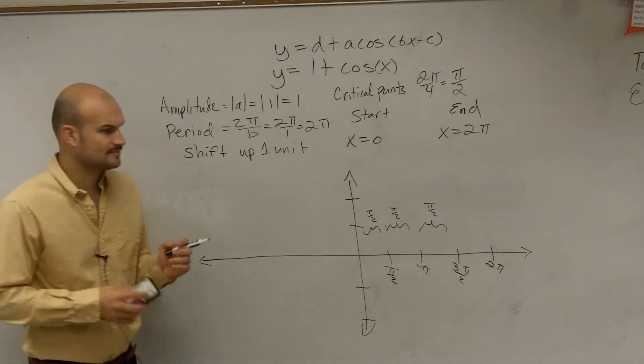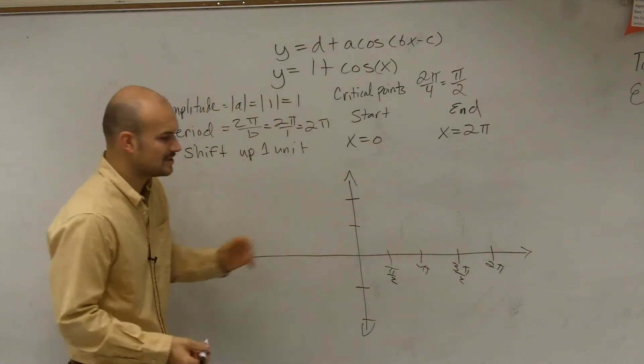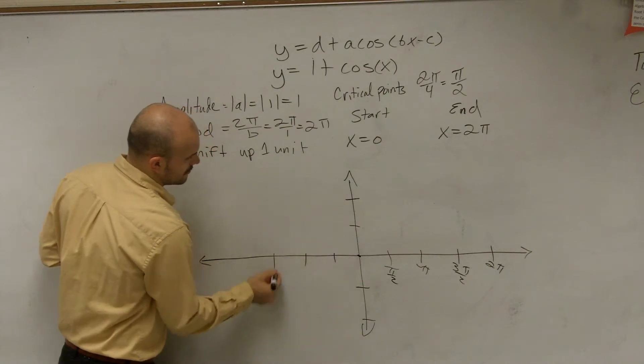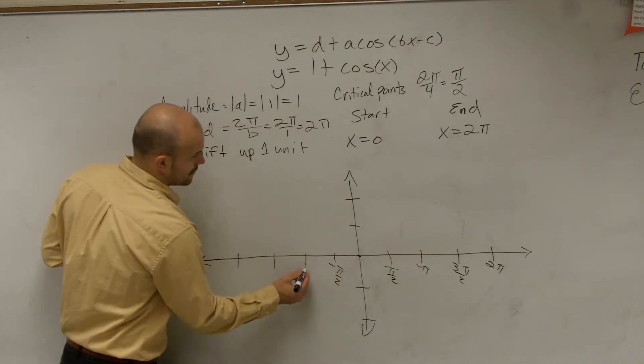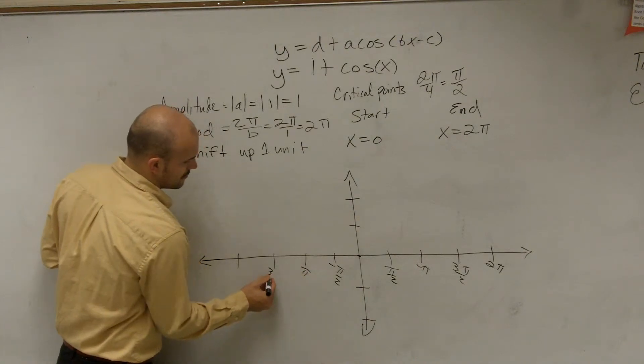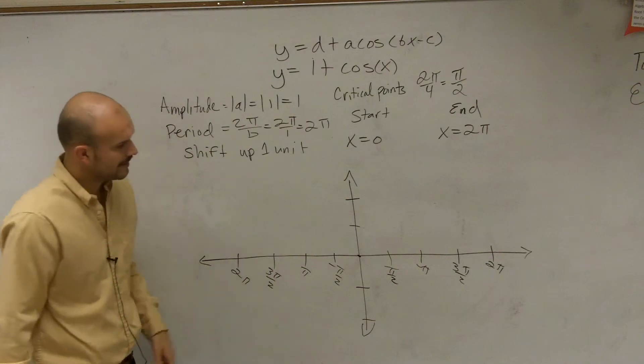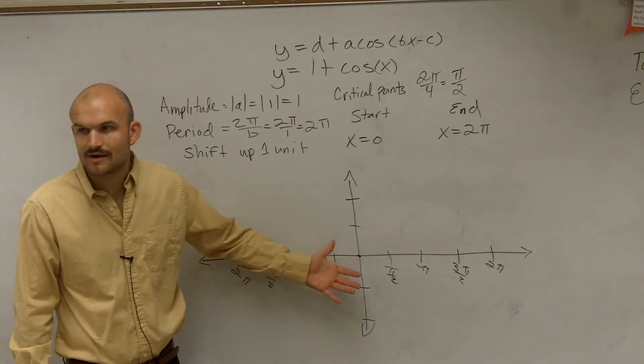Does everybody see what I did, how I scaled that? And we could also do this in the negative direction. Okay? So now, let's go and graph the cosine. Let's graph the parent graph of the cosine.